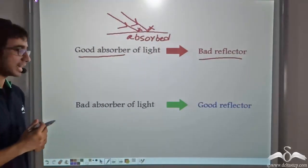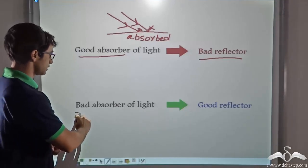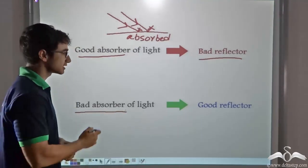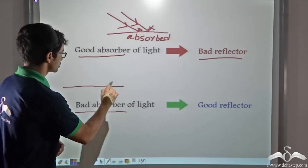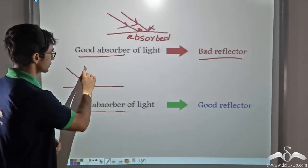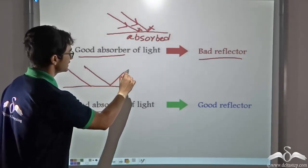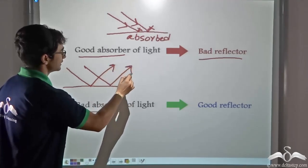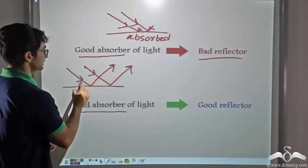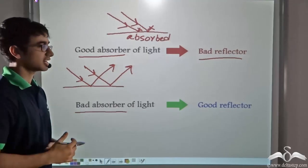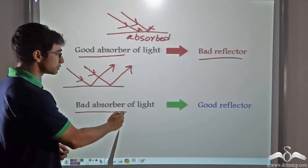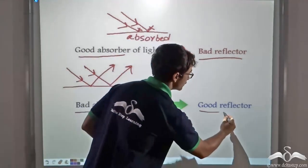But what if the object is a bad absorber of light? Well in that case when light falls on a bad absorber, most of it is reflected and thus this reflected beam reaches our eyes. So a bad absorber of light is a good reflector.